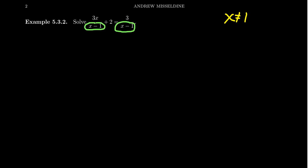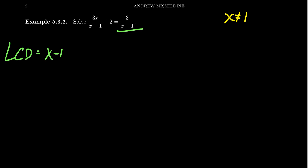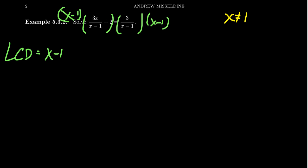In this example, the only denominator present is x minus 1, and it is repeated. Remembering the pizza story, both fractions request x minus 1, but that doesn't mean we get double pepperoni — just a pepperoni pizza. So we multiply both sides by x minus 1. Distributing on the left-hand side, the x minus 1 cancels with the first fraction leaving 3x, and gives 2 times x minus 1 for the middle term. On the right-hand side, the x minus 1 cancels leaving just 3.